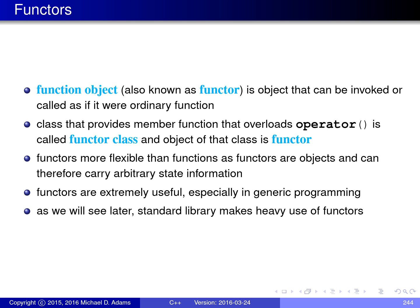A functor is simply an object that can be invoked or called as if it were an ordinary function. In other words, a functor is an object whose class overloads the function call operator — operator round brackets. A class that provides a member function overloading operator round brackets is what we call a functor class, and an object of that class is simply a functor.